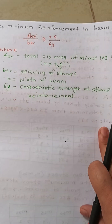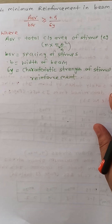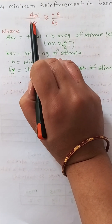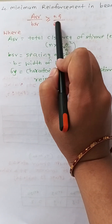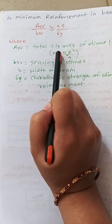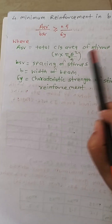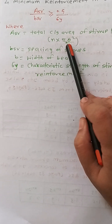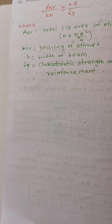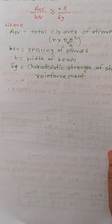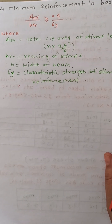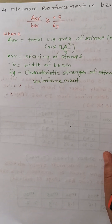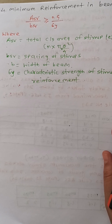The last terminology is minimum reinforcement in beams. It is calculated using the formula: Asv / (b·sv) ≥ 0.4 / σy, where Asv is the total cross-sectional area of stirrups (number of stirrups × π/4 × diameter²), sv is the spacing of stirrups, b is the width of the beam, and σy is the yield strength of the steel used.